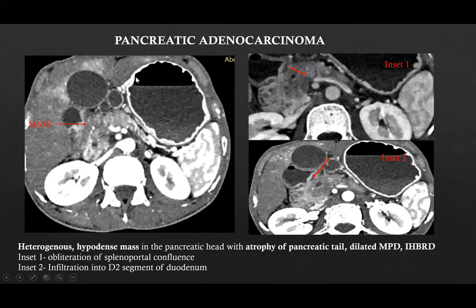This was a case of pancreatic adenocarcinoma. Here we can see a heterogeneous hypodense mass in the pancreatic head with atrophy of the pancreatic tail and a dilated MPD. There is associated intrahepatic biliary radical dilatation (IHBRD). In inset 1, we can see obliteration of the splenoportal confluence, and in inset 2, there is infiltration into the D2 segment of the duodenum.